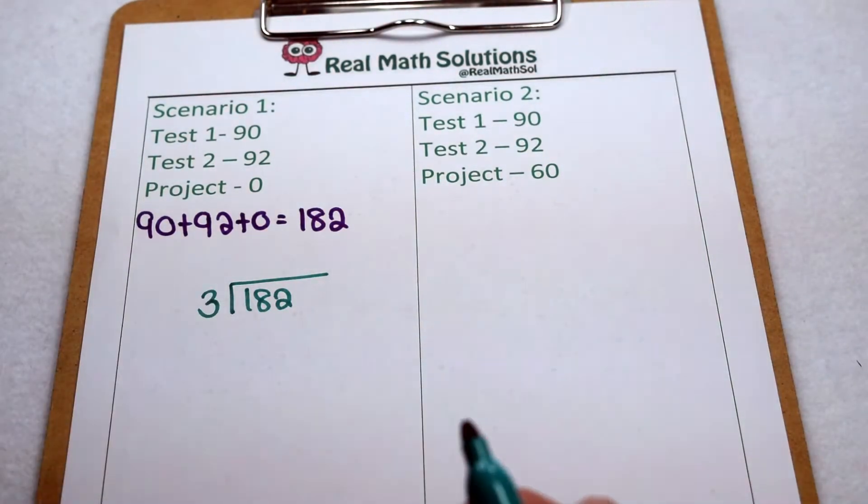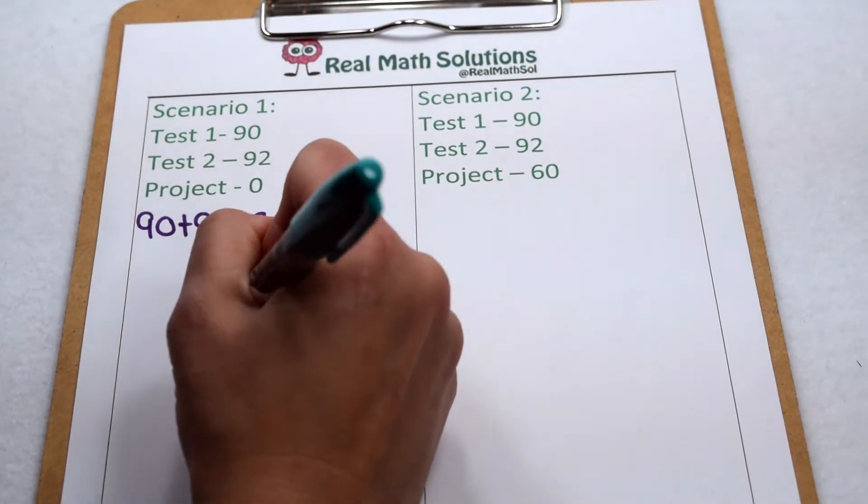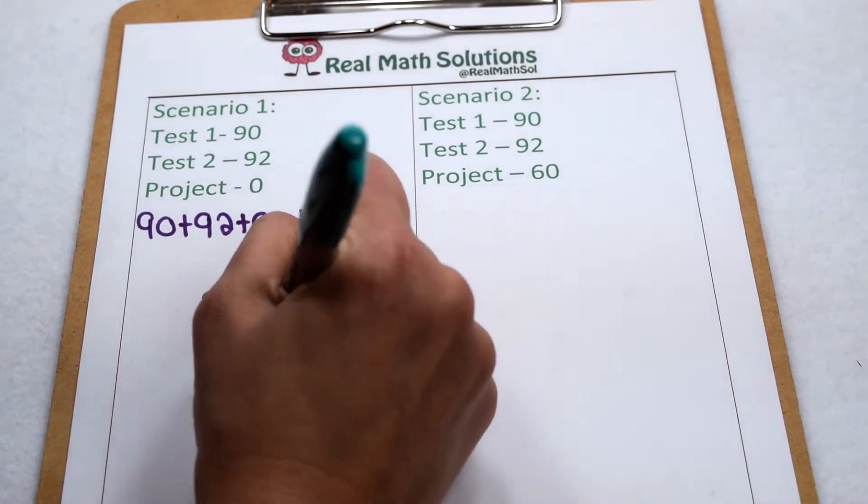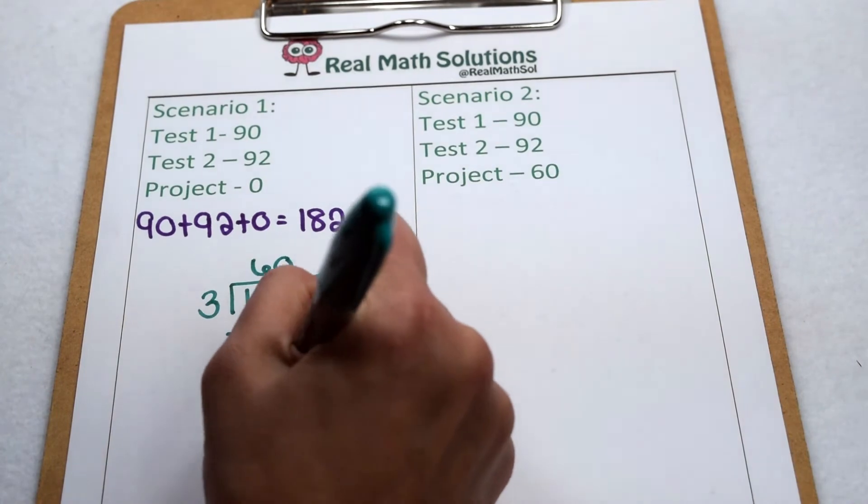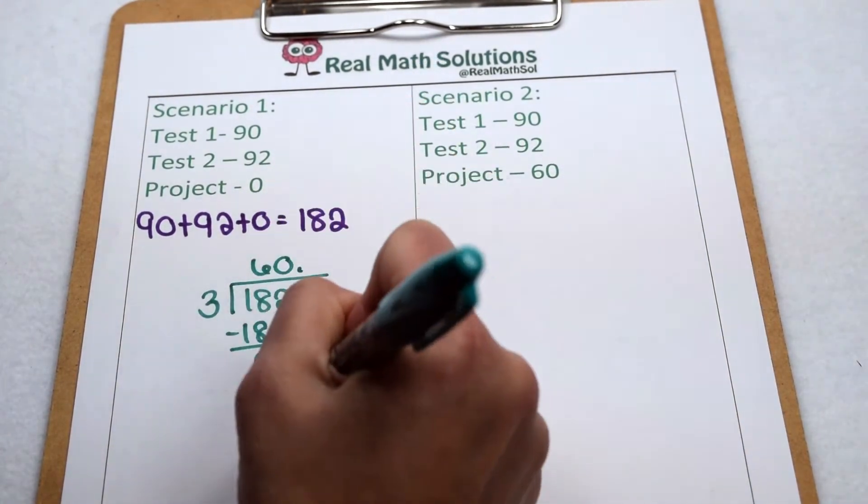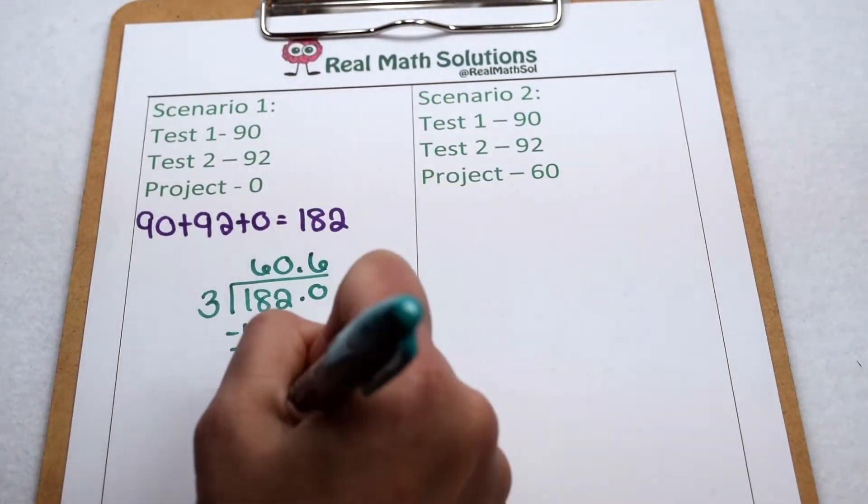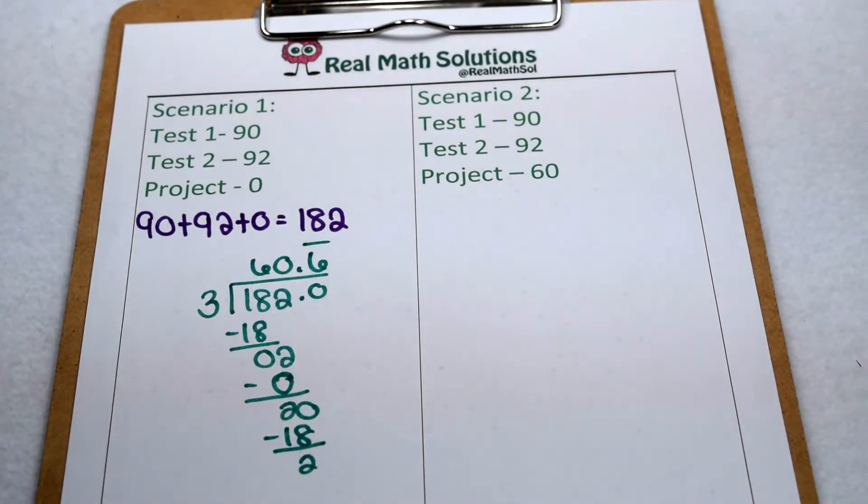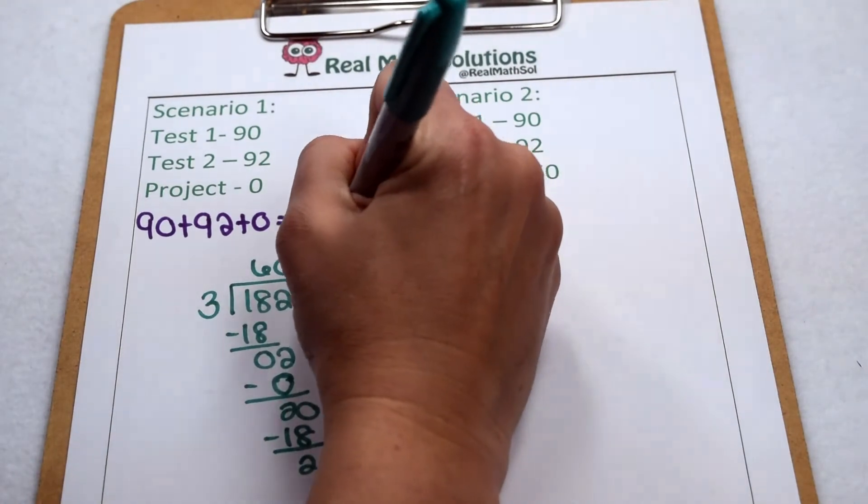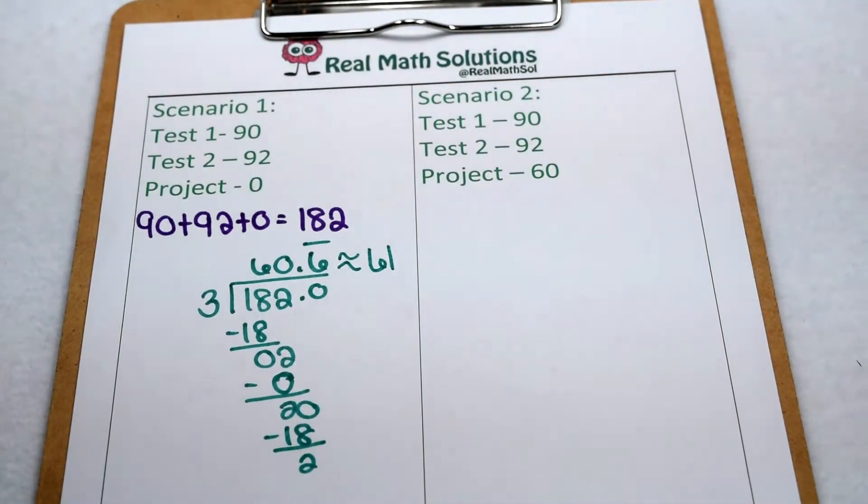So 182 divided by 3. 3 goes into 18, 6 times minus 18, bring down my 2. 3 doesn't go into 2, so there's a 0. We still have 2, so we add a decimal point, 0 and keep dividing. 3 goes into 20, 6 times minus 18, which again is a 2, so we're going to have a repeating decimal. 60.6 repeating rounds off to about a final average of a 61.